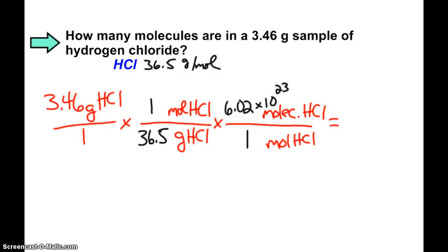When I multiply 3.46 times 6.02 times 10 to the 23rd, and then divide by 36.5, my answer comes out to be 5.71 times 10 to the 22nd molecules.